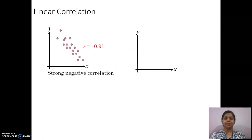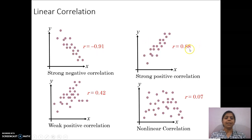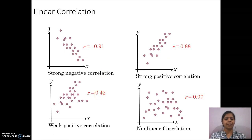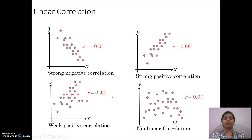Let's see an example. In the first case, the value of R is minus 0.91, which indicates negative correlation. In the second case, R equals 0.88, indicating strong positive correlation. In the third case, R is 0.42, which is weak positive correlation as it is not close to 1. And where R is 0.01, that is neither close to minus 1 nor plus 1, so there is no correlation at all.